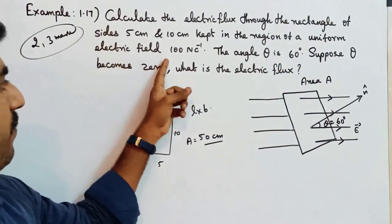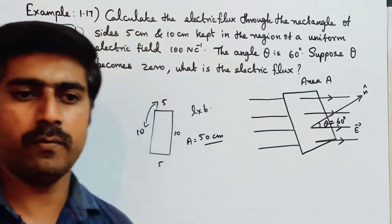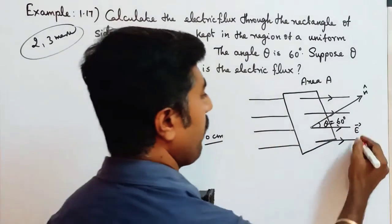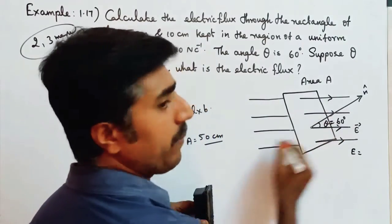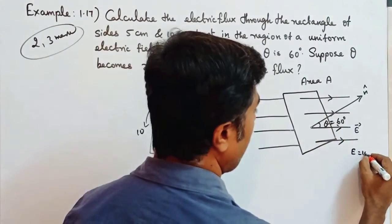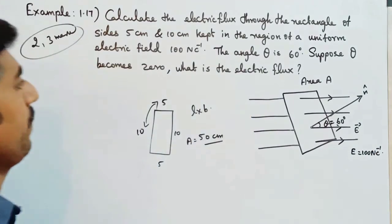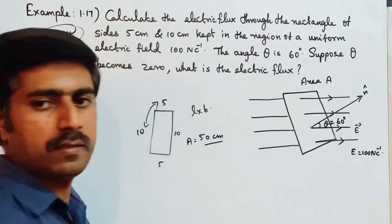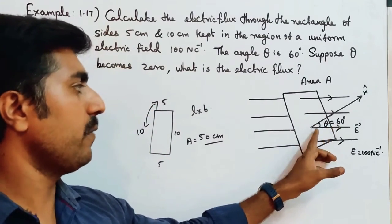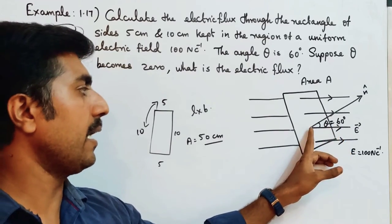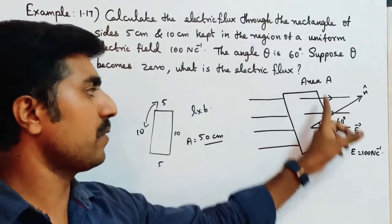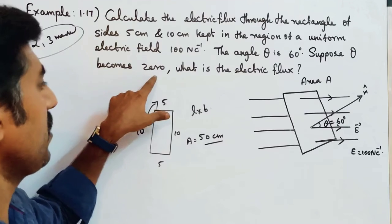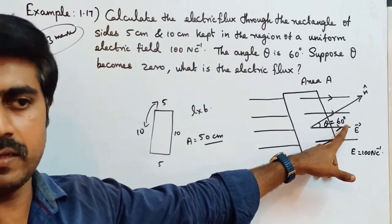This rectangle is kept in the region of a uniform electric field. In that region, the uniform electric field value E is equal to 100 newton coulomb power minus 1. The angle theta is given as 60 degrees. Theta is the angle between the uniform electric field and the line drawn normal to the surface of the rectangle. Here theta is not 0 - theta is 60 degrees.